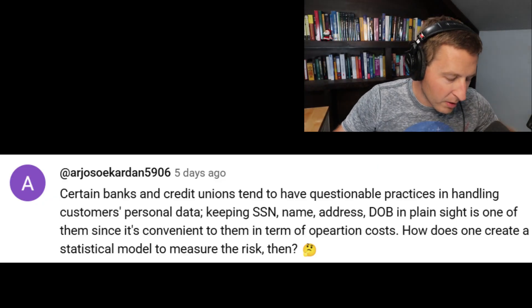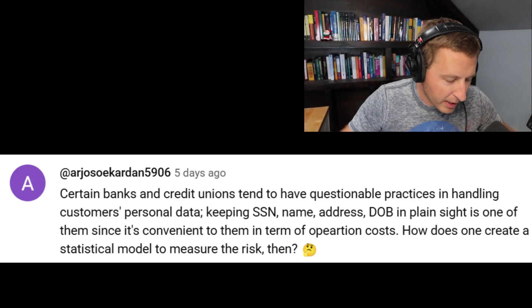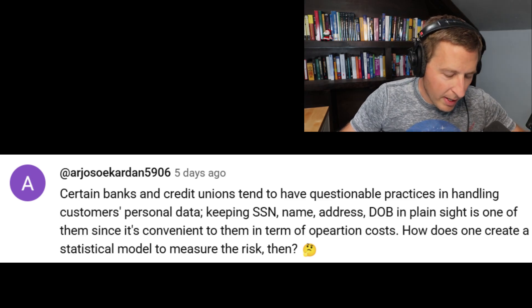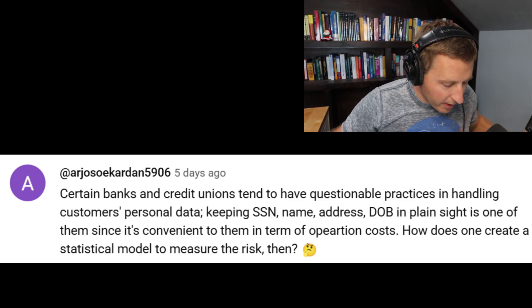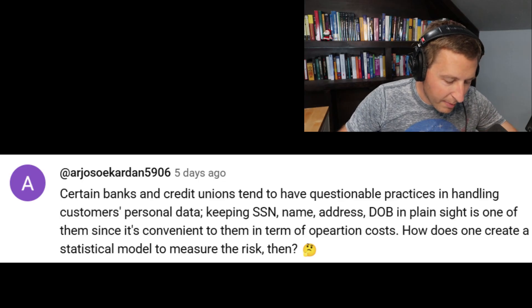The question here is: certain banks and credit unions tend to have questionable practices in handling customers' personal data, keeping social security numbers, names, addresses, and dates of birth in plain sight, since it's convenient for them in terms of operation costs. How does one create a statistical model to measure the risk? Basically, what they're getting at is credit unions and smaller firms tend to be lax on rules. I have actually noticed this when I've attended small credit unions, banks, and financial institutions, and yes, some of them lack the rules because it's much easier to do so.